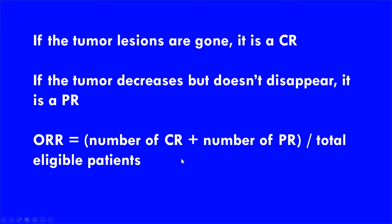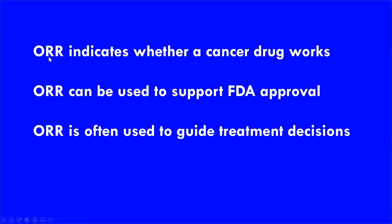Why does this matter? ORR indicates whether a cancer drug is working. Not only that, but it can be used to support FDA approval and it's often used to guide treatment decisions. There are a bunch of different things you can measure in a study to get a sense of whether a drug is actually working, but some of them aren't as impactful as others.